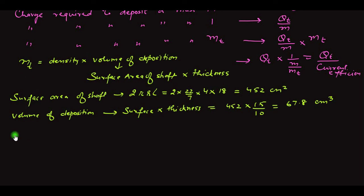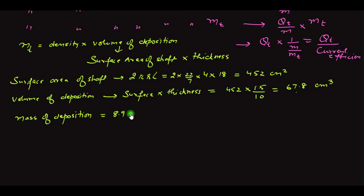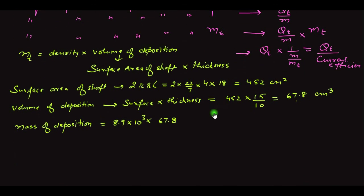Mass of deposition = density × volume = 8.9 × 10³ kg/m³ × 67.8 cm³. Converting 67.8 cm³ to m³ by dividing by 100³, the mass = 0.6034 kg.